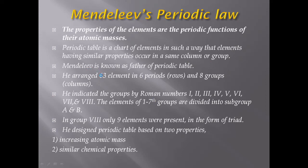Mendeleev arranged 63 elements in 6 periods (horizontal rows) and 8 groups (vertical columns). He indicated the groups by Roman numerals I through VIII. Elements of groups 1 to 7 were divided into subgroups A and B. In group 8, only 9 elements were discovered in the form of triads — groups of 3 elements kept together in one slot.